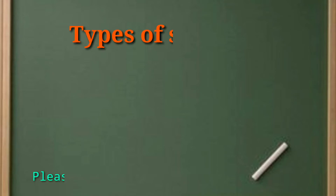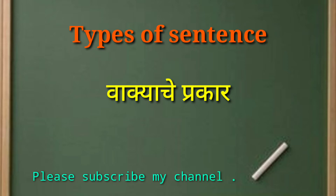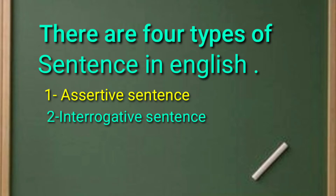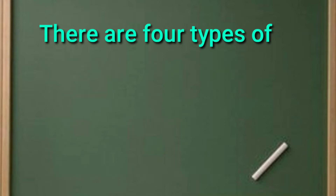Hello friends, welcome back again. Here is a new video about the remaining part of the sentence — types of sentence, means vaakya che prakar. There are four types of sentence in English: first is assertive sentence, interrogative sentence, imperative sentence, and exclamatory sentence. We will discuss each and every one here.